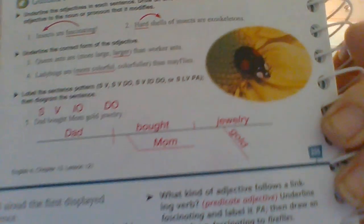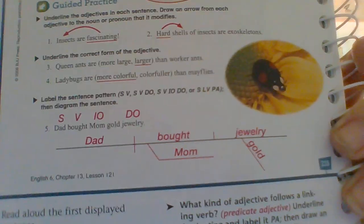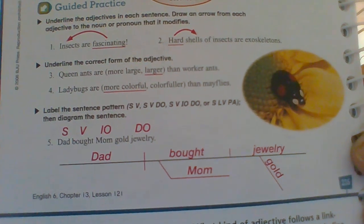When you diagram that sentence, you'll have 'dad' as the subject with a perpendicular line going all the way down across the sentence line. Then you have a small perpendicular line with 'jewelry' and 'mom' — mom goes below 'bought' because it's the indirect object, and 'gold' goes below 'jewelry.' I'm going to show you what mine looks like — go ahead and fix yours to make it look like this.